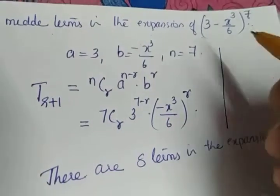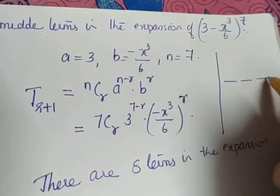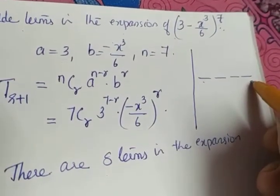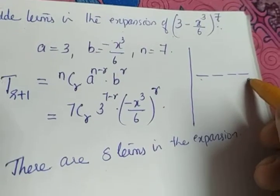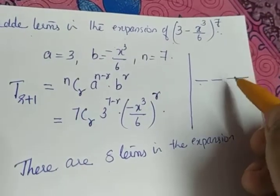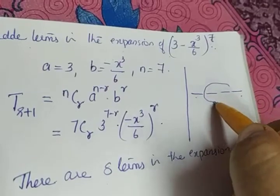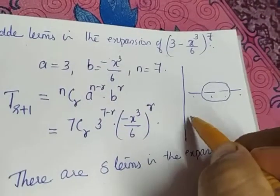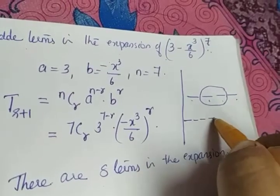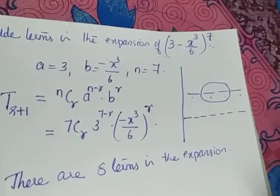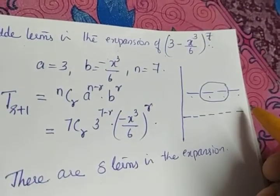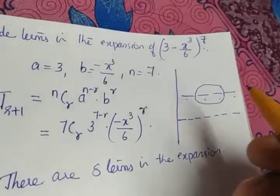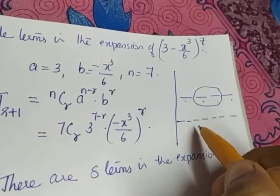Before going to this question, suppose there are 4 members sitting in a row — who is the middle one? 4 is an even number, so if I want to find the middle person, it is not a single one. There will be 2 persons: a person sitting at position 2 and 3 will be the middle persons. If there are 6 persons, 6 is also an even number, so we are not able to find a single person sitting in the middle. There will be 2 persons sitting in the middle.